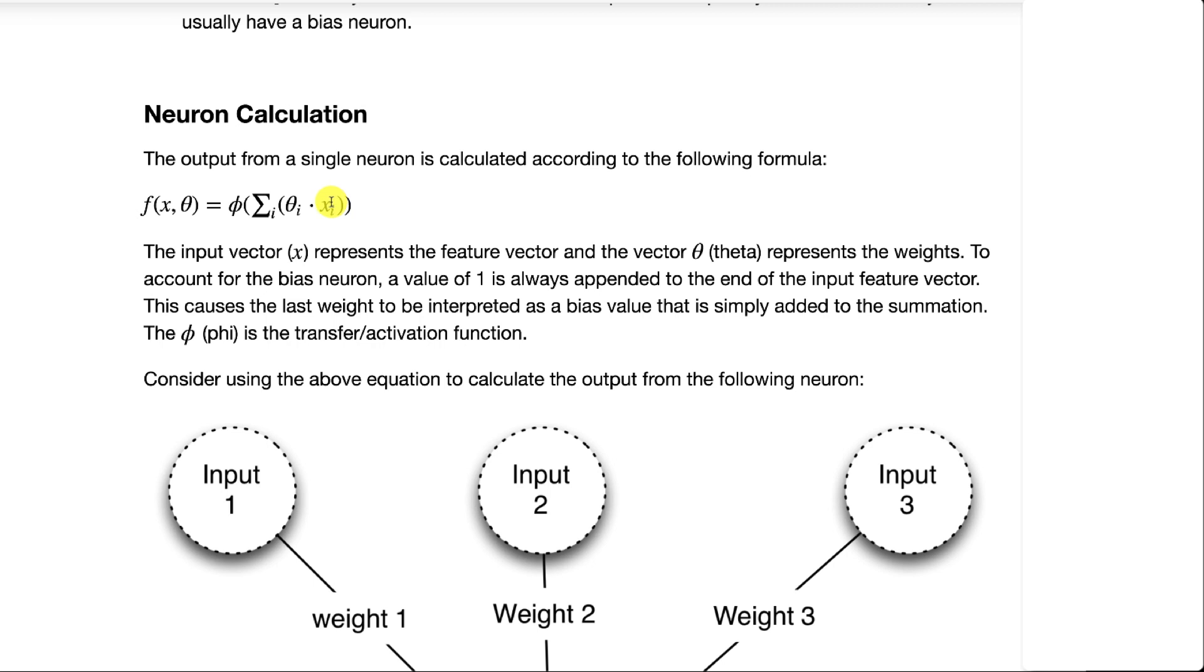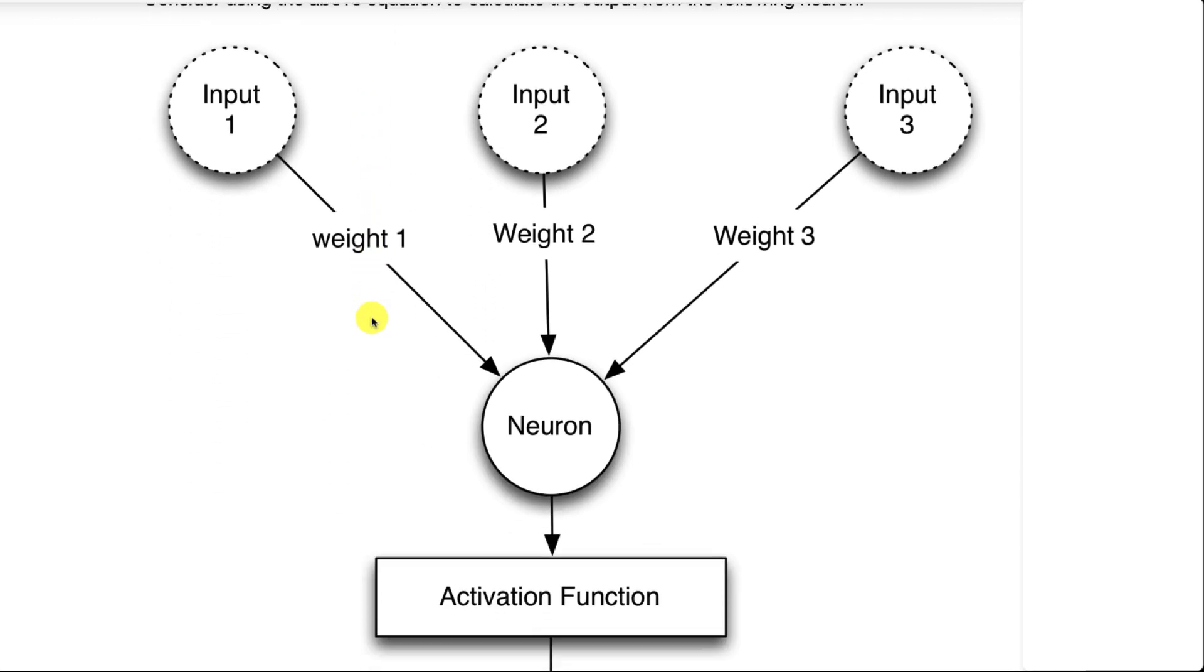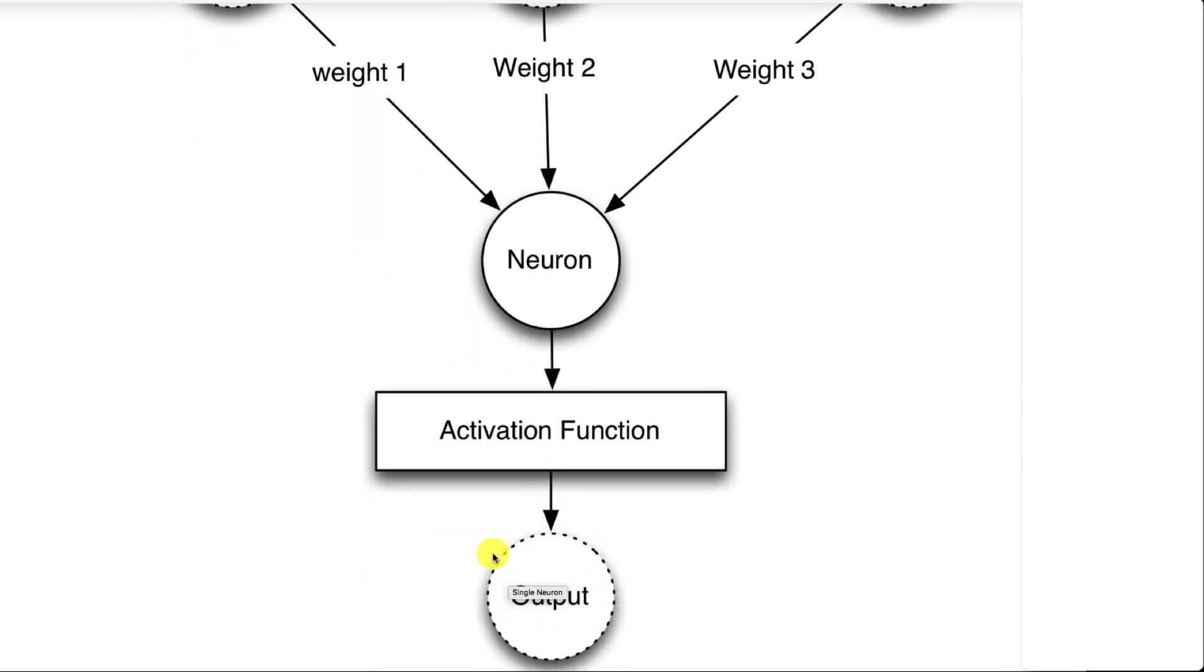Times all the x's, the x's are inputs, and then φ (phi) is the activation function. This is basically done over and over again to calculate every hidden and output neuron in the neural network.